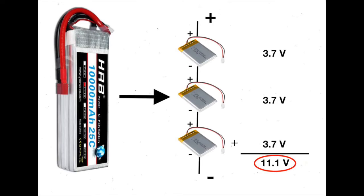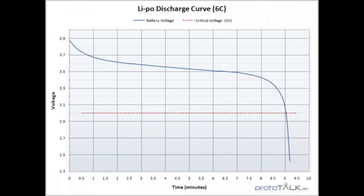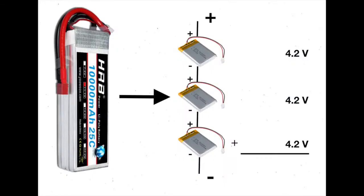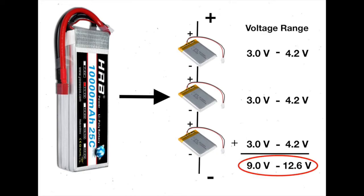3.7 and 11.1 are nominal voltages. In reality, the voltage of a LiPo battery cell decreases as the battery discharges. A fully charged battery cell has a voltage of 4.2 volts and a minimum safe voltage of 3.0 volts. Thus, the 3-cell LiPo battery has a voltage operating range of 9 volts to 12.6 volts.